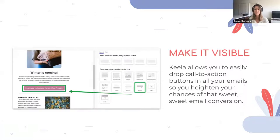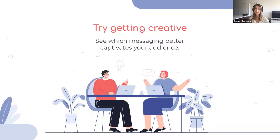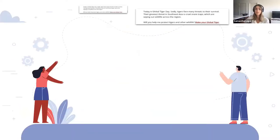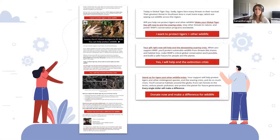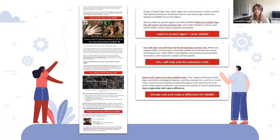You can change button colors to match your brand and send readers directly to your donation form. Also, get creative to see which messaging better captivates your audience — 'Help us reach our goal' might be more effective than 'Donate now.' Here's an example: the World Wildlife Federation uses different donate buttons: 'I want to protect tigers and other wildlife,' 'Yes, I will help end the extinction crisis,' and 'Donate now and make a difference for wildlife.' All three link to the same donation page, and the team tracked which buttons got the most clicks to inform future campaigns.